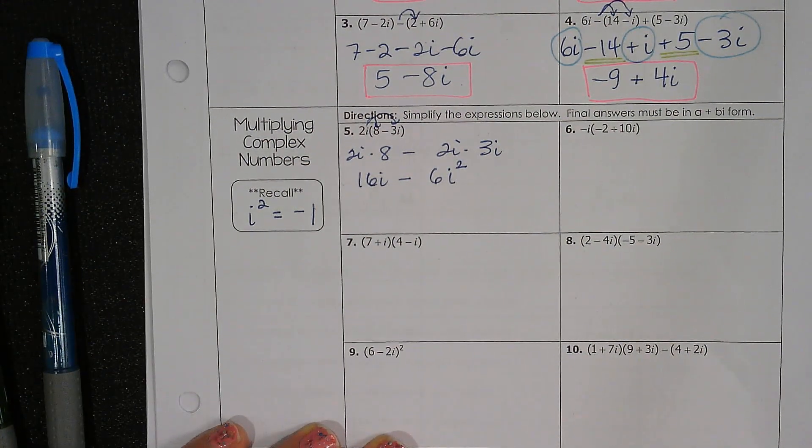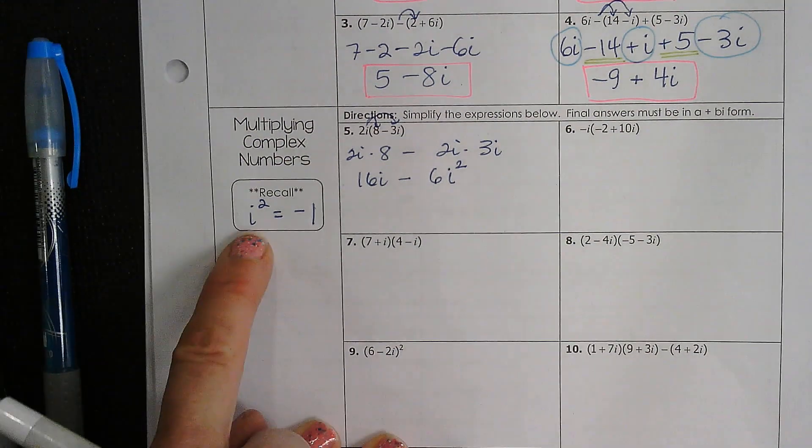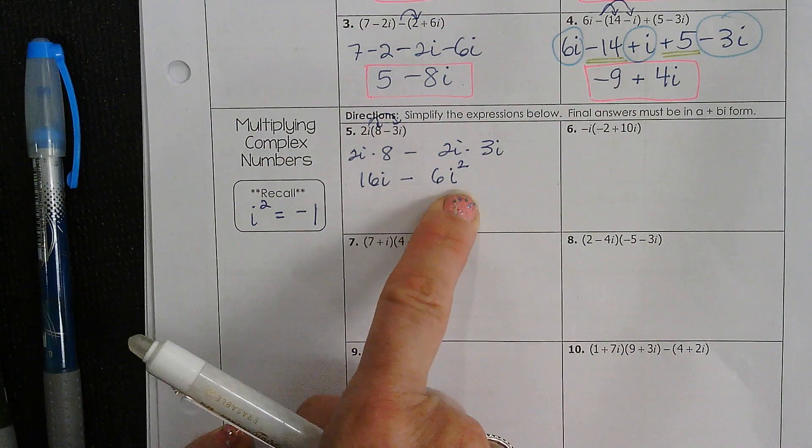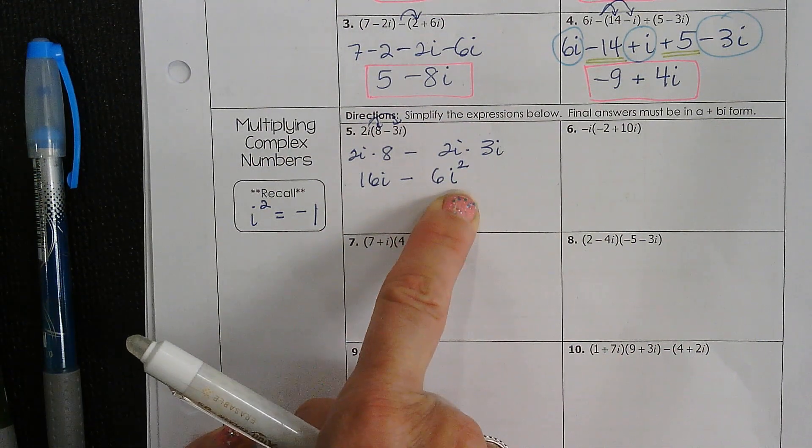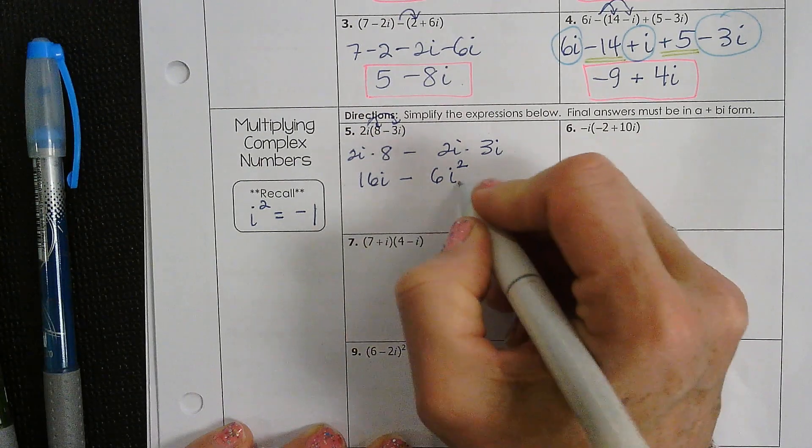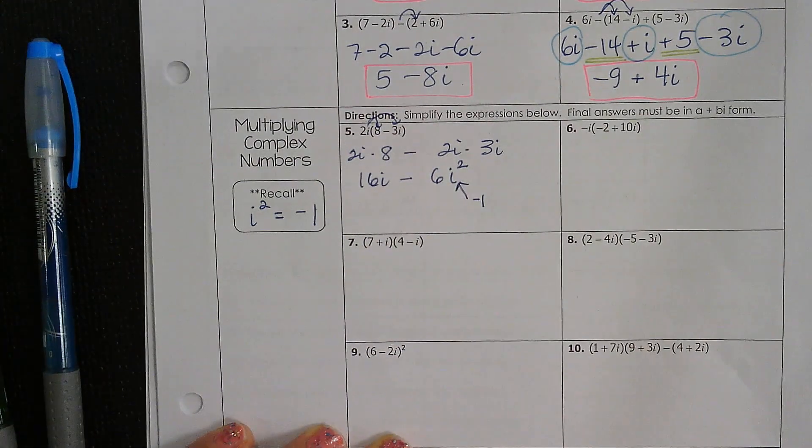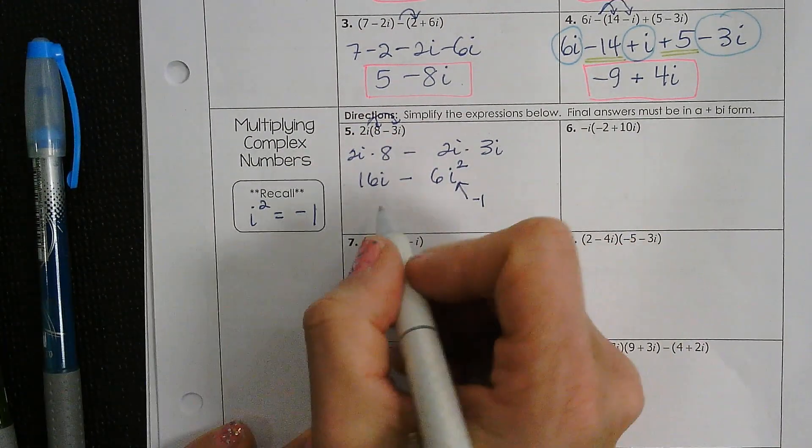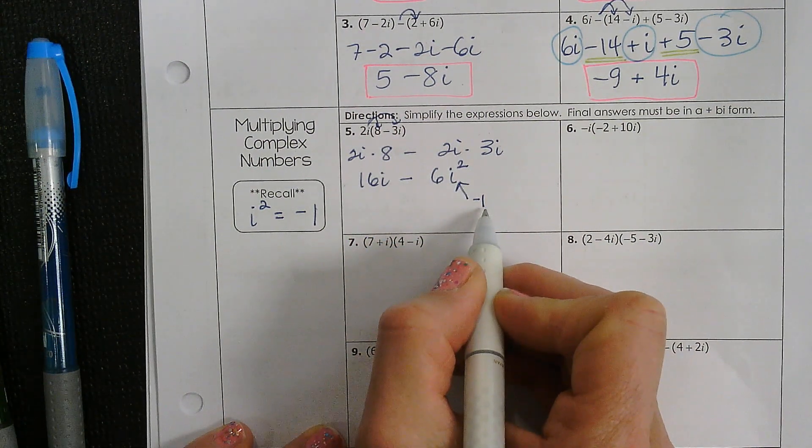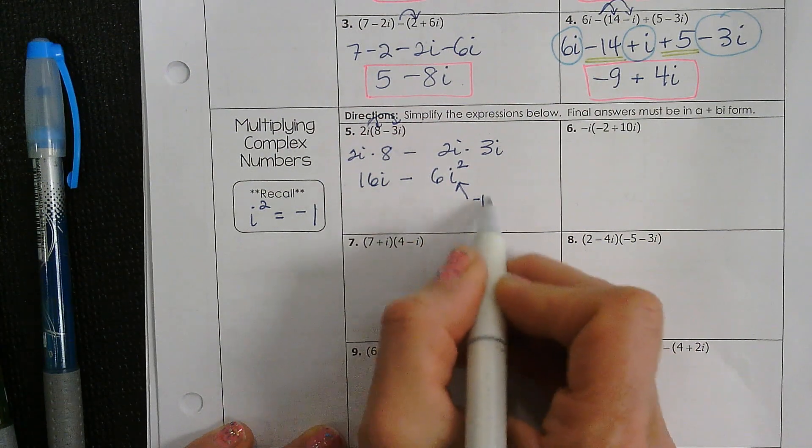So what happens now is you can substitute negative 1 here, and it changes the number. So that is negative 1. So now I have 16i minus 6 times negative 1. What is minus 6 times negative 1?